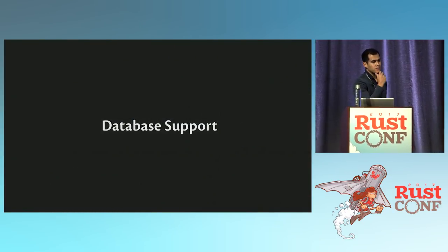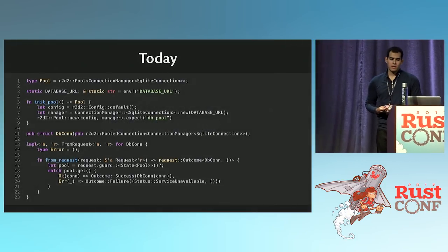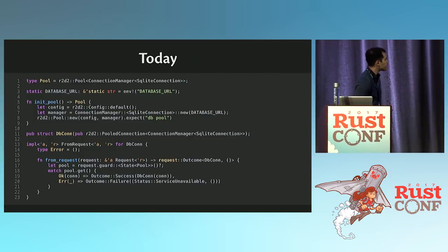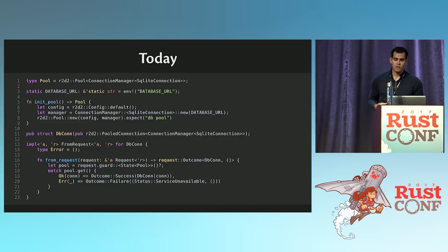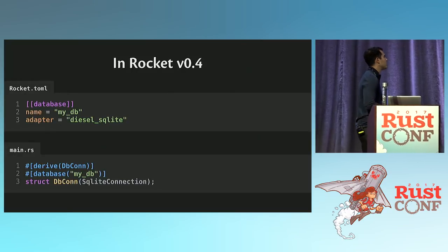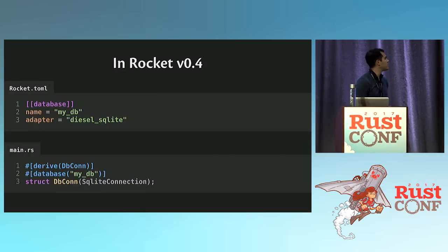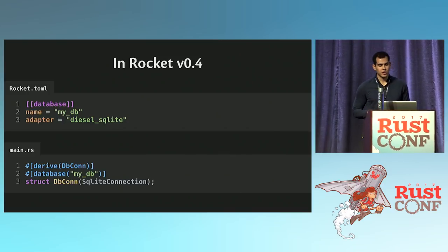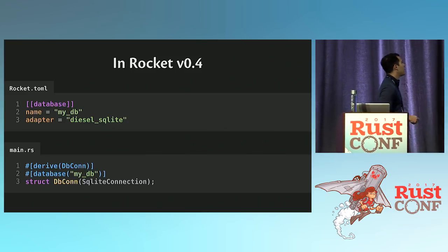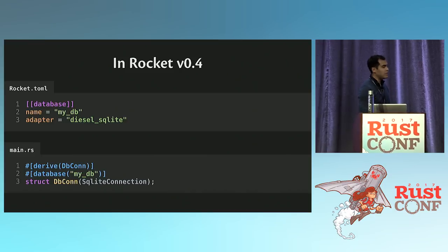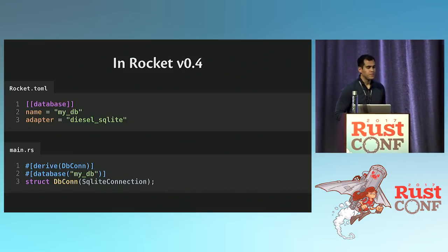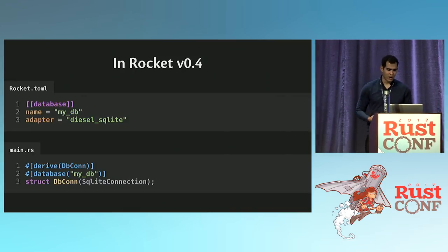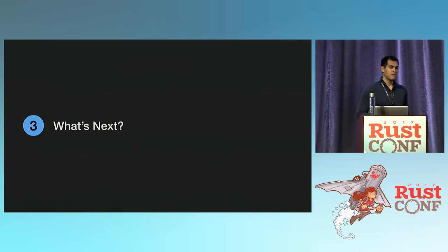The next thing is database support. To use databases with Rocket now, it's a bit cumbersome. What I want this to look like in version 0.4 is: in your `Rocket.toml` file, you specify I have a database named `MyDB` with the adapter being Diesel's SQLite. Then in your code, you would just derive some trait and tell Rocket the database you want to access is `MyDB`. Then you can just use that type as a request guard in your code. Taking something very complex and making it very small — really nice and easy to use, getting rid of boilerplate while keeping type safety.